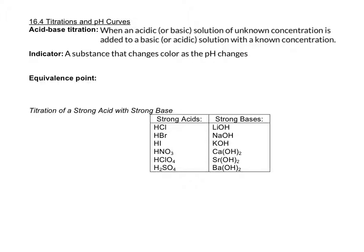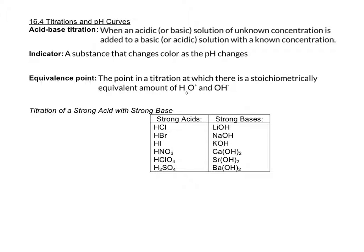The equivalence point in a titration is the point when the number of moles of base is stoichiometrically equivalent to the number of moles of acid. So if you have a monoprotic acid and a base that just has one OH, this would be when there's an equal mole of each. If you have a diprotic acid, you would need twice as much base to get to the equivalence point.